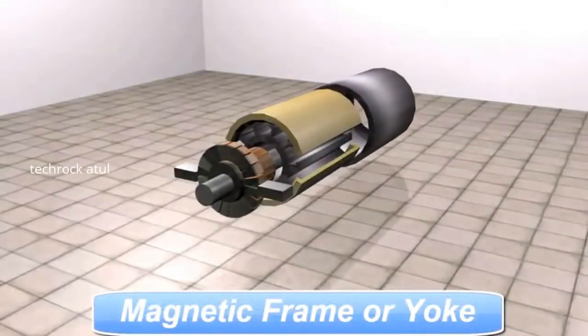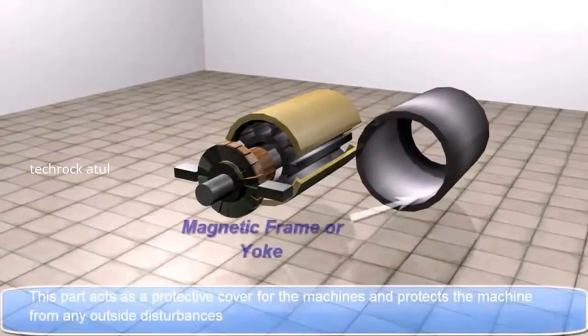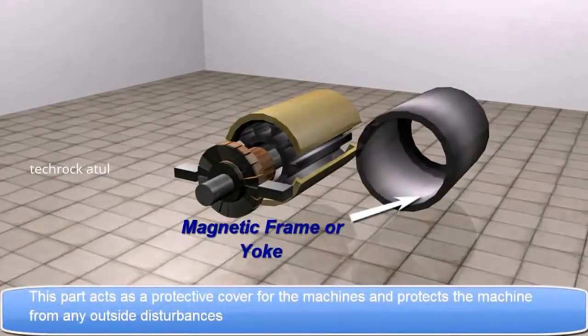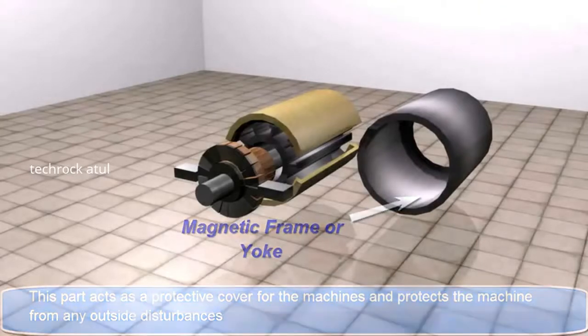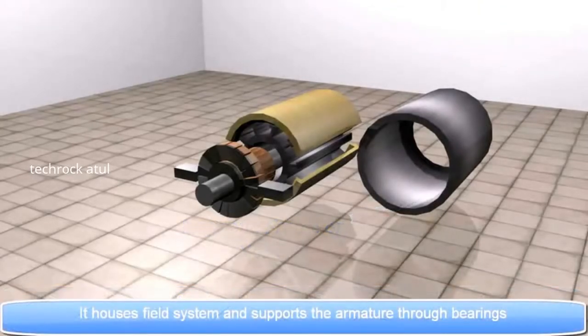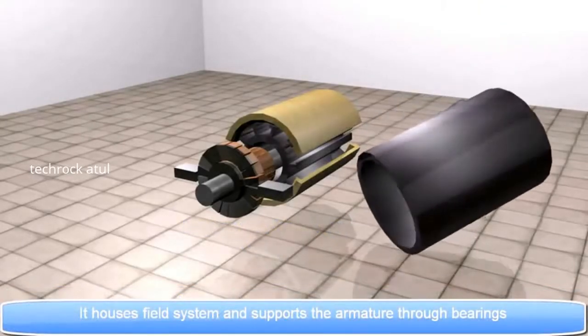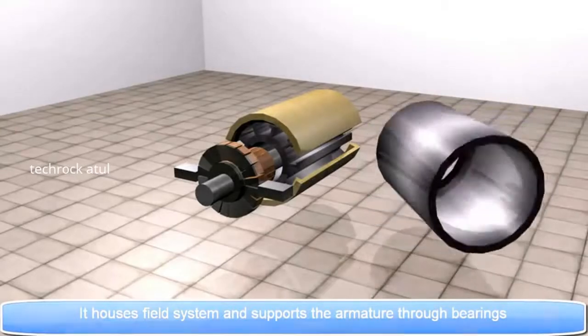Magnetic frame or yoke. This part acts as a protective cover for the machines and protects the machine from any outside disturbances. It houses field system and supports the armature through bearings.